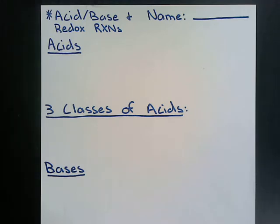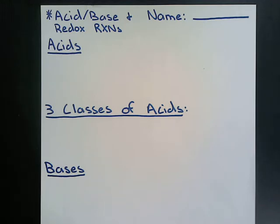And if that happens, write the balanced equation and be able to identify the net ionic equation. So let's get into our details. We start out here with acids. Acids are defined as substances that are able to ionize in aqueous solutions to form H+ or hydronium ions.